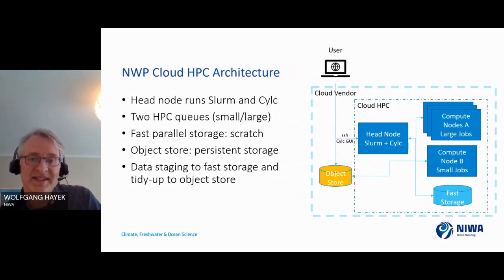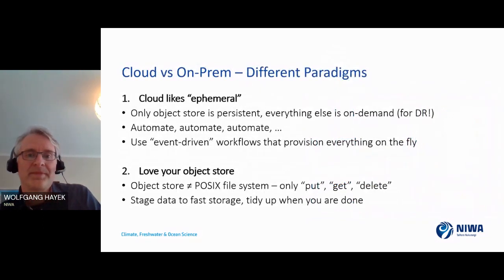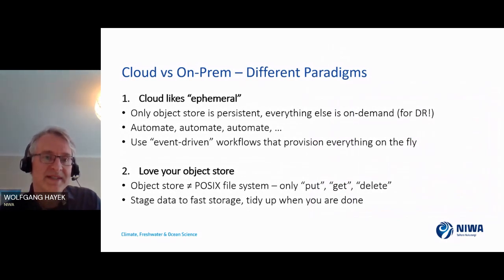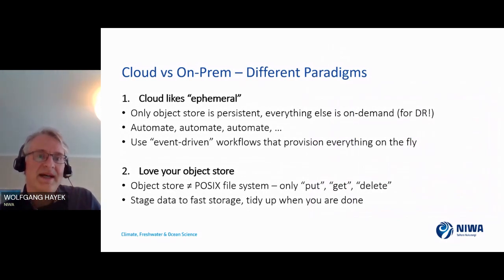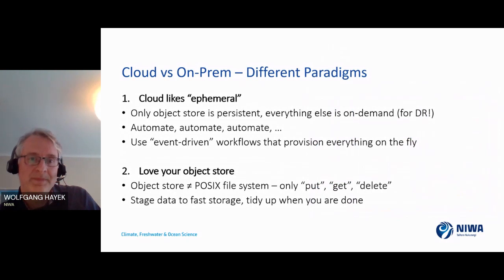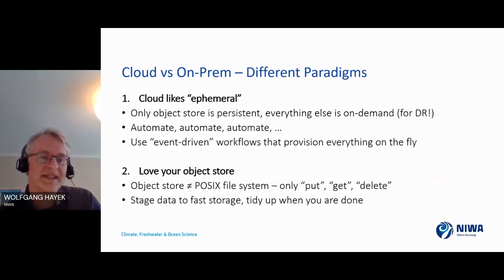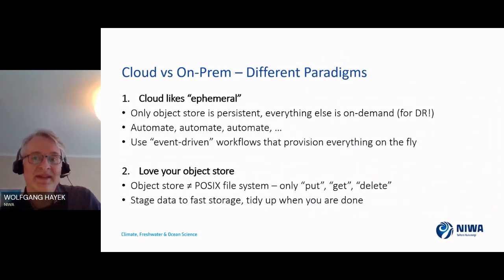The main difference is the object store — something we don't currently have. The object store makes quite a difference when you start using the HPC. In the cloud you tend to use ephemeral setups: you don't normally provision resources persistently. Apart from central storage, the compute and even high-performance storage don't have to be persistent, which is actually advantageous — especially for disaster recovery — when you provision on the fly.